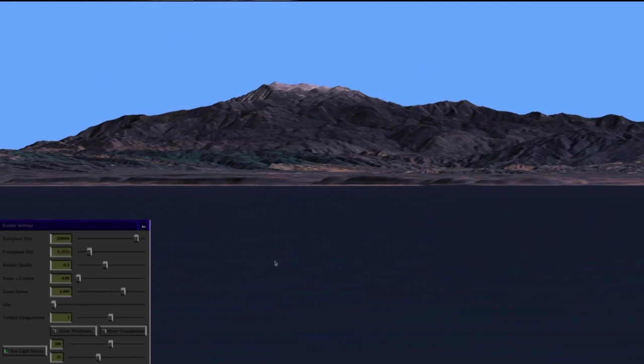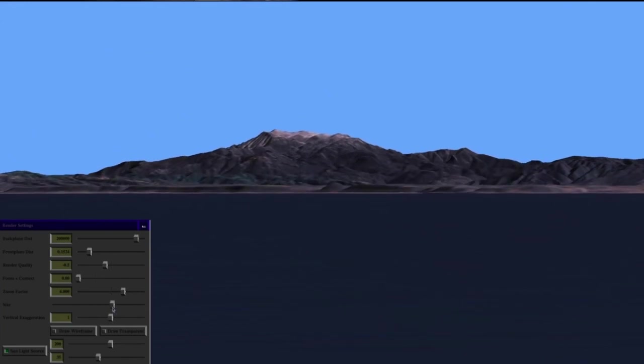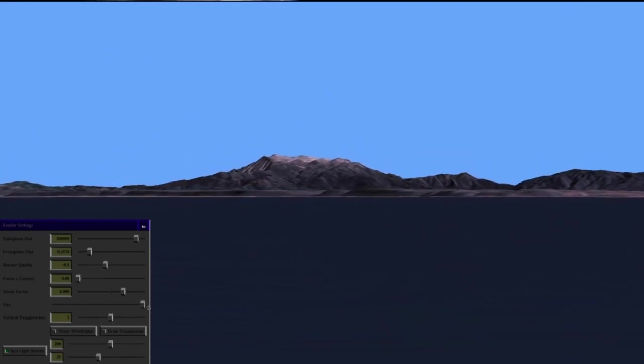On the other hand, flat Earth theory also made a prediction, namely that the mountain, when photographed from this particular distance, should look like this, but then in the experiment, the actual photograph, it ended up looking like this. So that, unfortunately, did not work out. This does not mean that the Earth is round. It just means that flat Earth theory has some explaining to do.